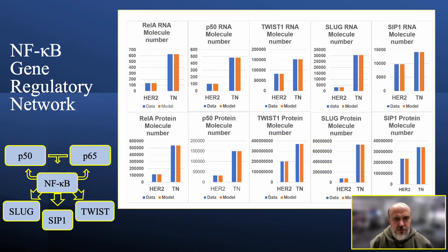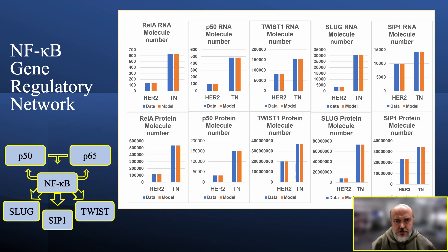To understand the molecular mechanisms responsible for this increase in expression level, we built a gene regulatory network describing NF-κB transcriptional regulation over itself, snail, slug, and twist. We then used the law of mass action to build a model of ordinary differential equations, and used the software COPASI to calibrate it to the number of mRNA and protein molecules of all these genes estimated from our real-time qPCR data.